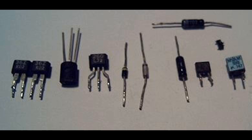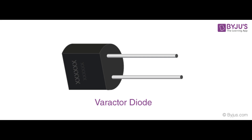Antenna matching: Varactor diodes adjust the impedance of an antenna system for optimal signal transmission and reception. They are used in adaptive antenna systems and mobile communication devices.